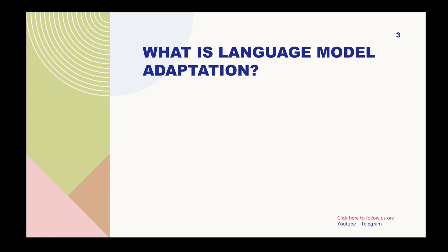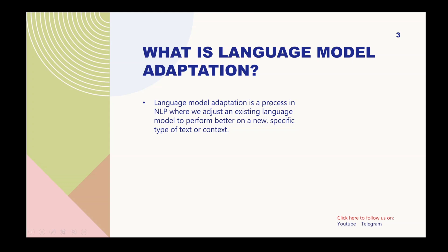Now apply that same analogy to understand language model adaptation. Consider the language model as Aman, who is telling you stories in a general way. Language model adaptation is Aman trying to adapt his storytelling to bedtime storytelling. So language model adaptation is a process in NLP where we adjust an existing language model to perform better on a new, specific type of text or content.